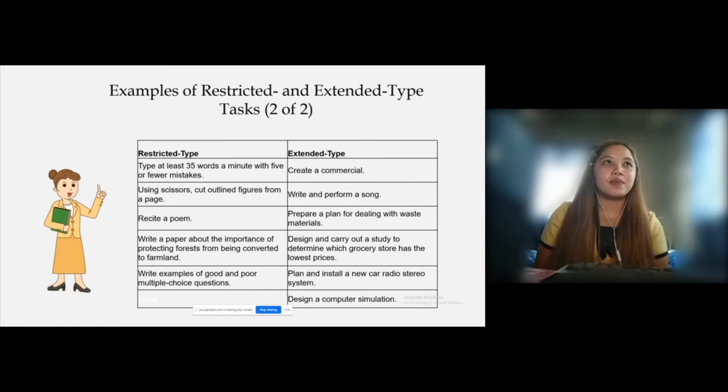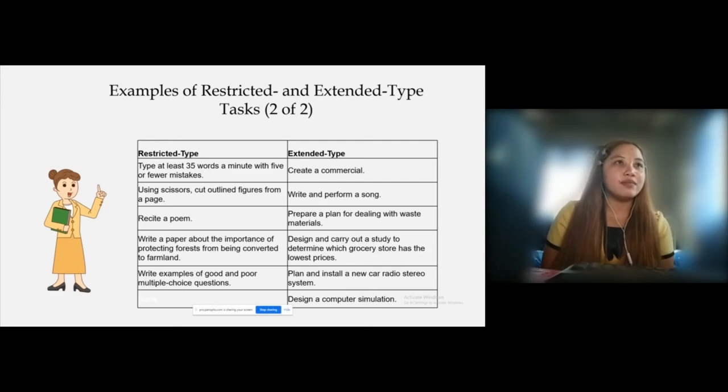This is part two of the examples of restricted and extended type. In restricted type, students will be able to type at least 35 words a minute with five or fewer mistakes. Using scissors, cut and outline figures from a page, recite a poem, write a paper about the importance of protecting forests from being converted to farmland, then write examples of good and poor multiple choice questions.